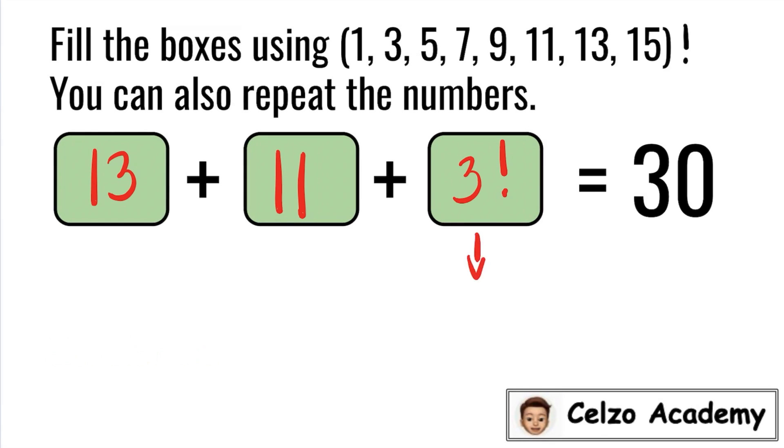3 factorial means 3 times 2 times 1, which is equal to 6. So 13 plus 11 plus 3 factorial is equal to 30. You may also change the order of these numbers. Can you think of other solutions?